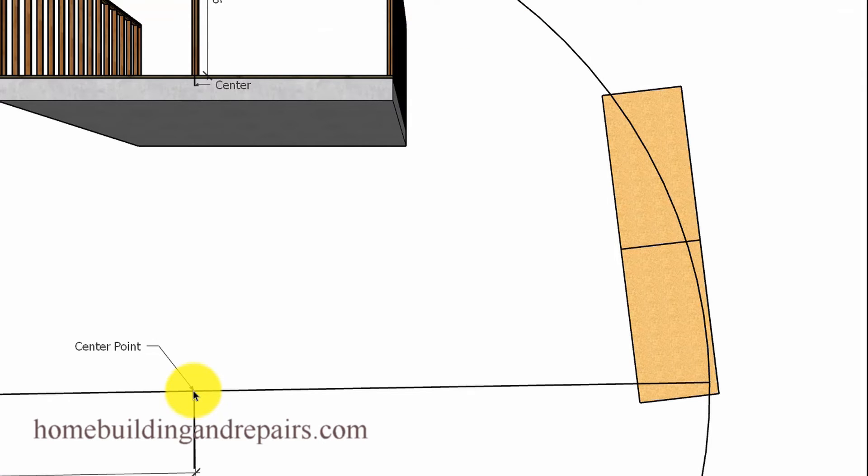You're going to hook your tape measure over the point here, and then you will use it to draw a line on the plywood pieces. And that will give you your curved line.